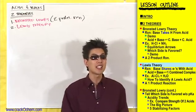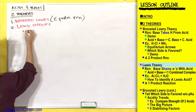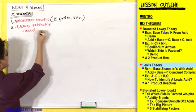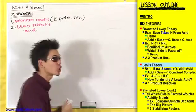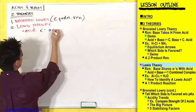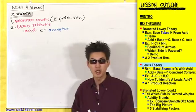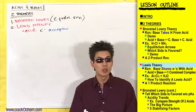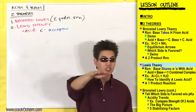Brønsted-Lowry theory defines acids and bases purely in terms of hydrogens — in terms of protons. Lewis theory takes the opposite approach and defines acids and bases purely in terms of electrons. A Lewis acid is defined as an electron acceptor. With Brønsted-Lowry, an acid was a proton donor; here, with Lewis theory, an acid is an electron acceptor — they're kind of like flip sides of each other.